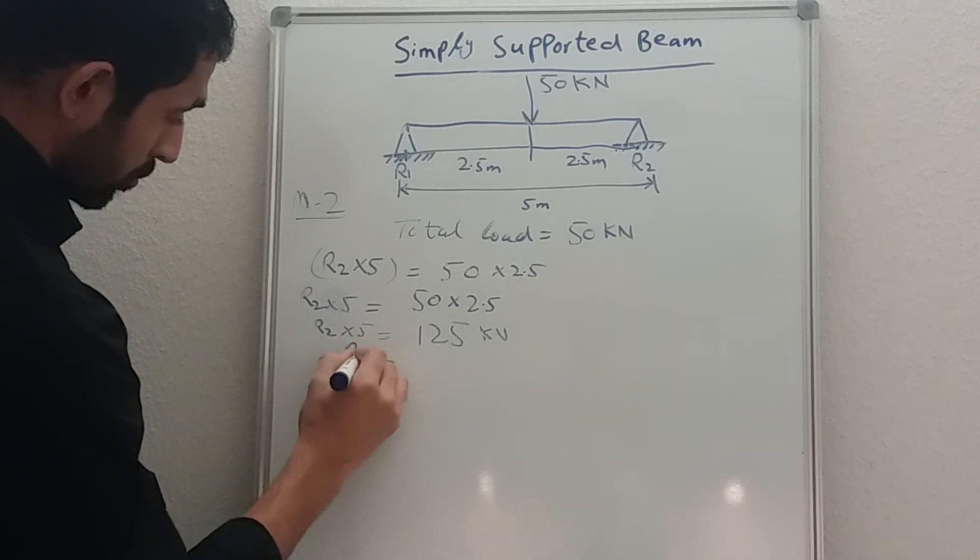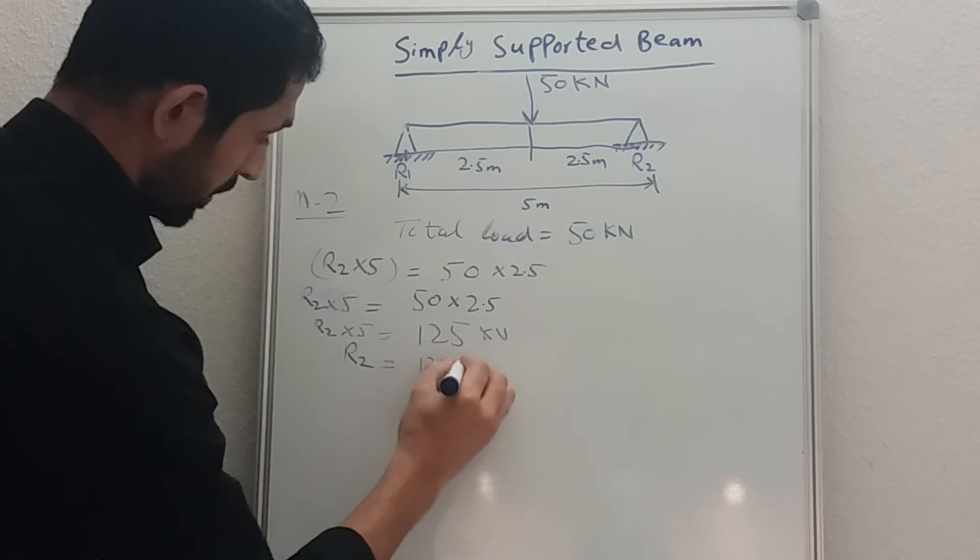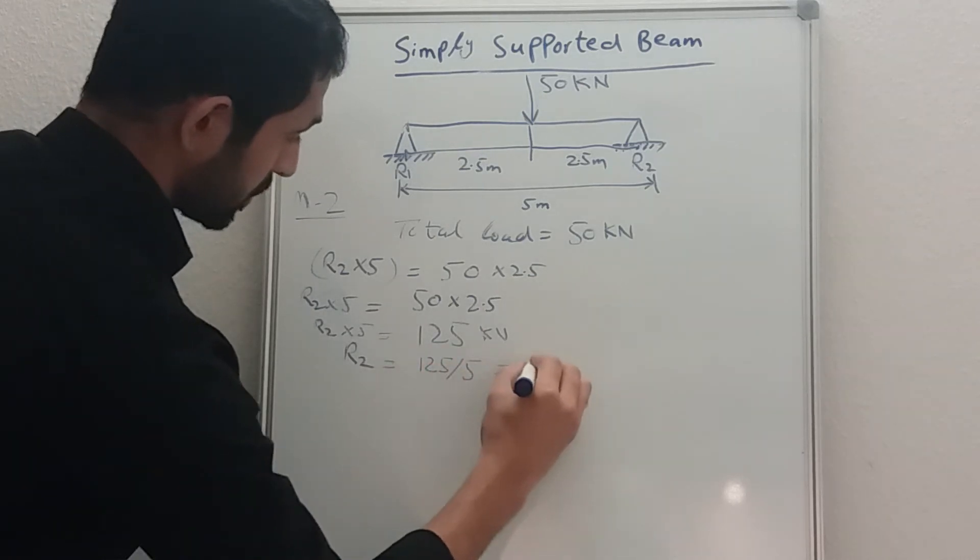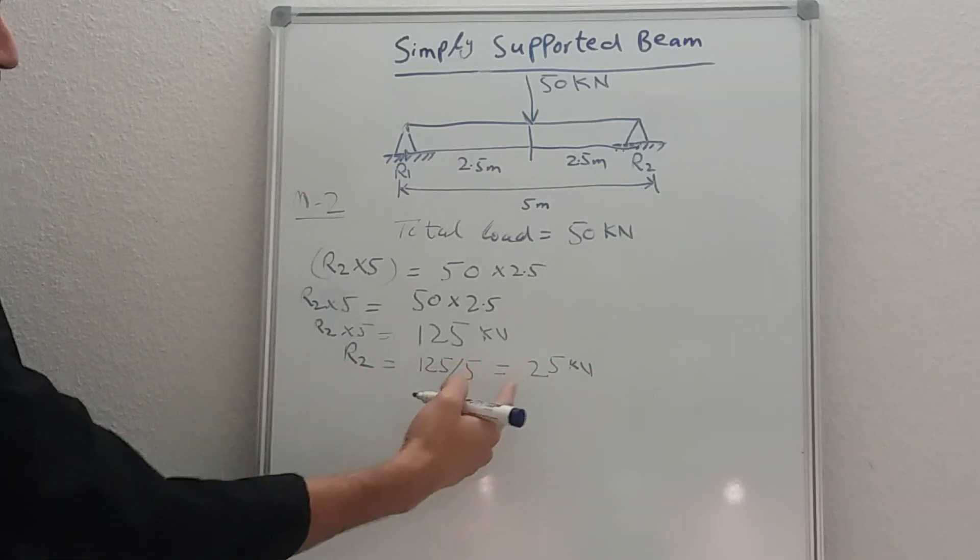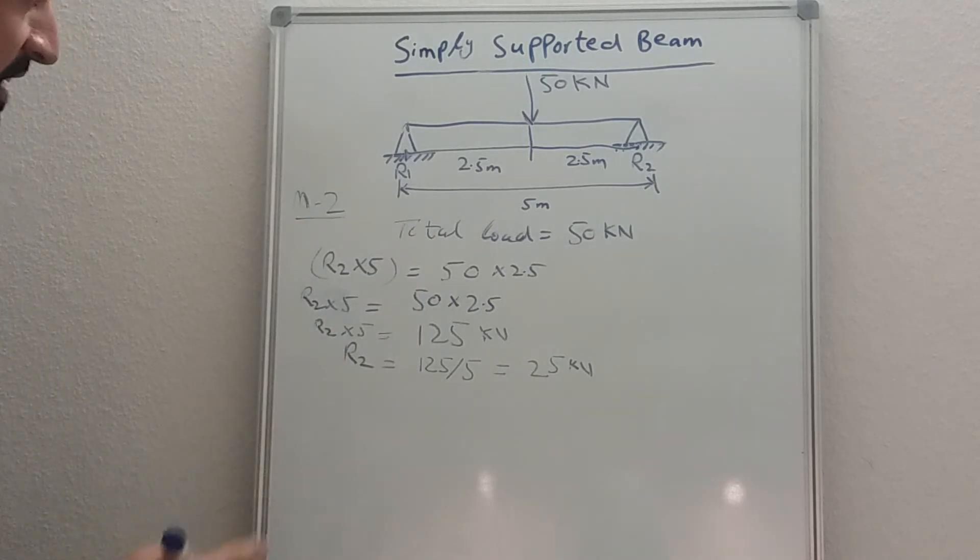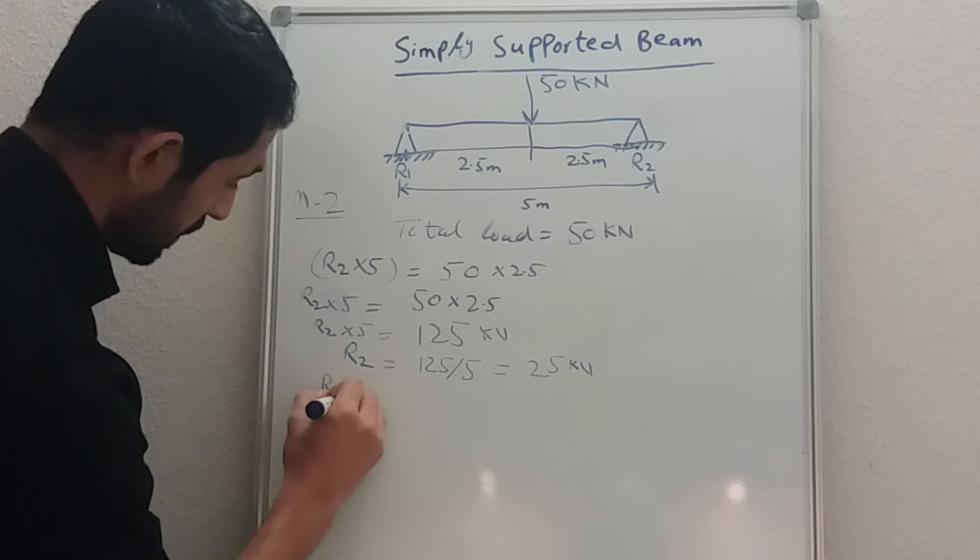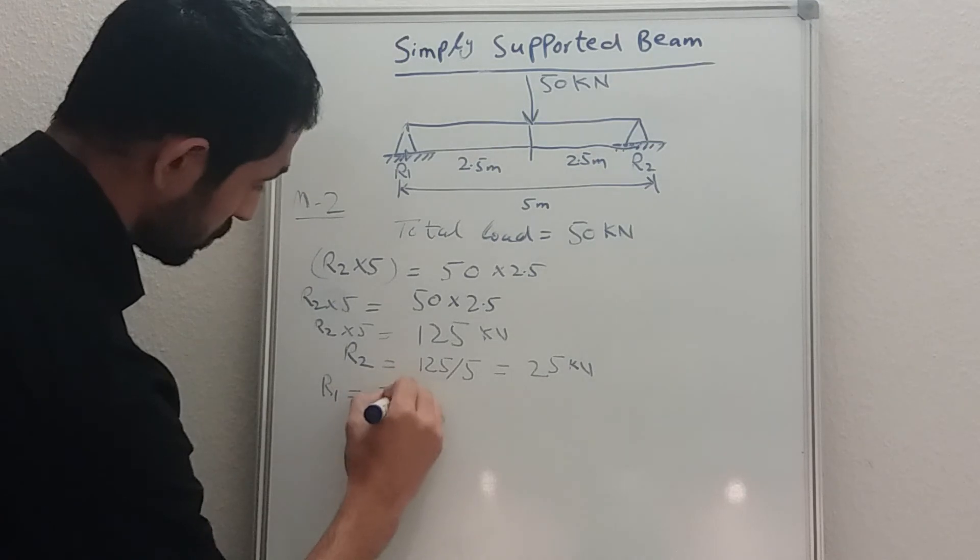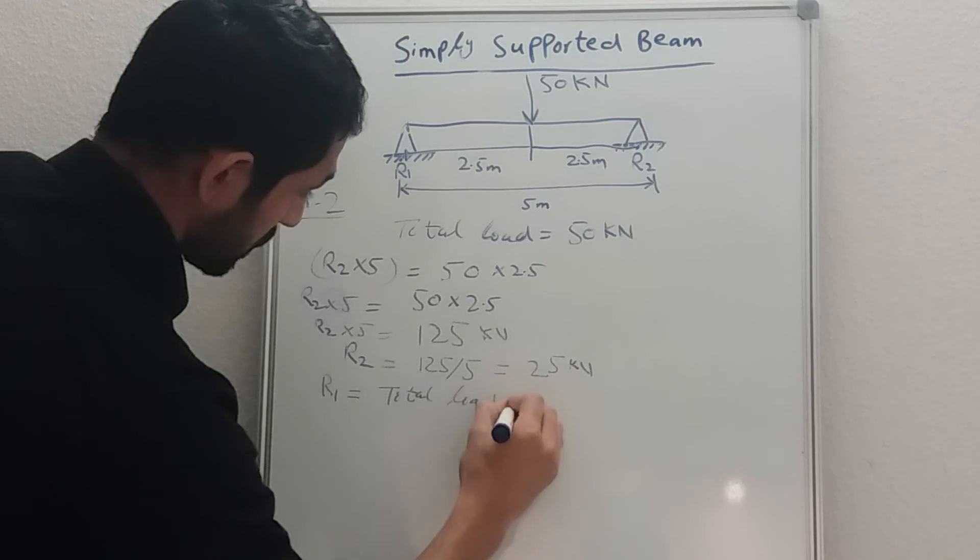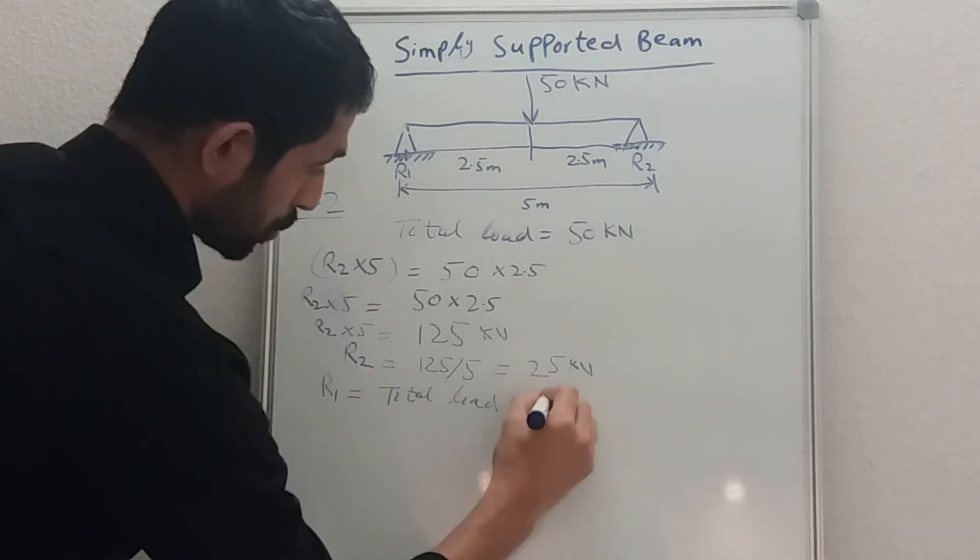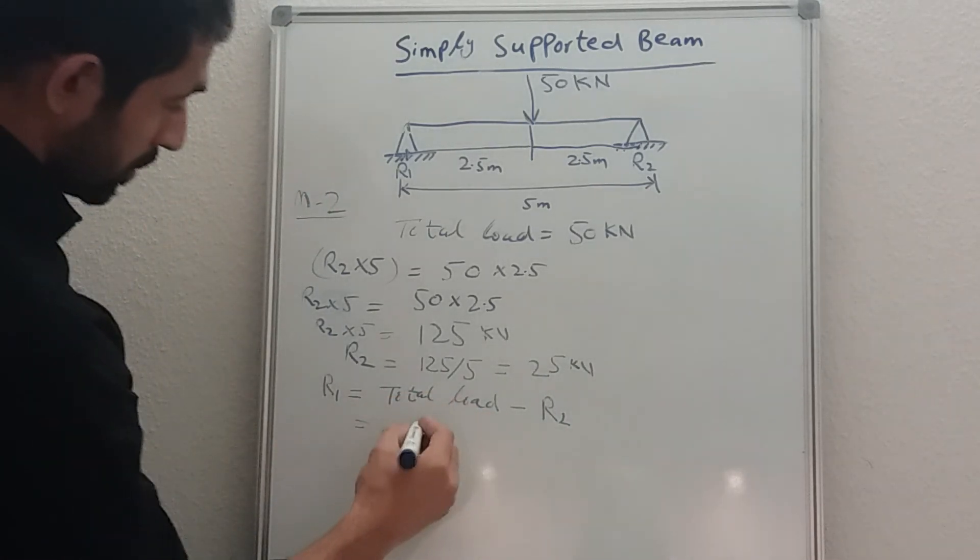Okay, so we have 25 kilonewton. Now we need to calculate the reaction at support R1. Okay, so how you gonna calculate that one? It's just simple. R1 is equal to total load minus R2. So as we know, total load is 50, R2 is 25.